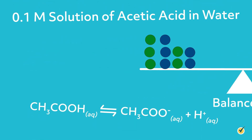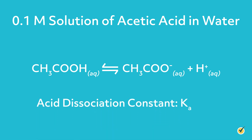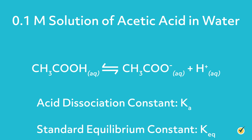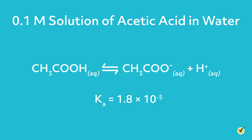Say we have a 0.1 molar solution of acetic acid, a weak acid, in water. A weak acid only partially dissociates in solution, and that equilibrium is described by the acid dissociation constant, Ka — a special form of the standard equilibrium constant, Keq. Ka equals 1.8 times 10 to the negative 5 for acetic acid. So we can start by calculating how much acid would initially dissociate in a 0.1 molar solution — in other words, we can calculate the equilibrium concentrations.